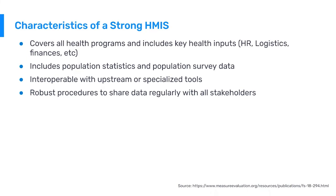A strong HMIS also includes population statistics and population survey data. It is extremely important that the HMIS has the most updated and reliable population data, as many key indicators are based on population statistics — things like national coverage rates and reporting rates, which are based upon a denominator that is usually a population. If we don't have updated or reliable population statistics, we are not able to calculate some of those key impact indicators like coverage rates.